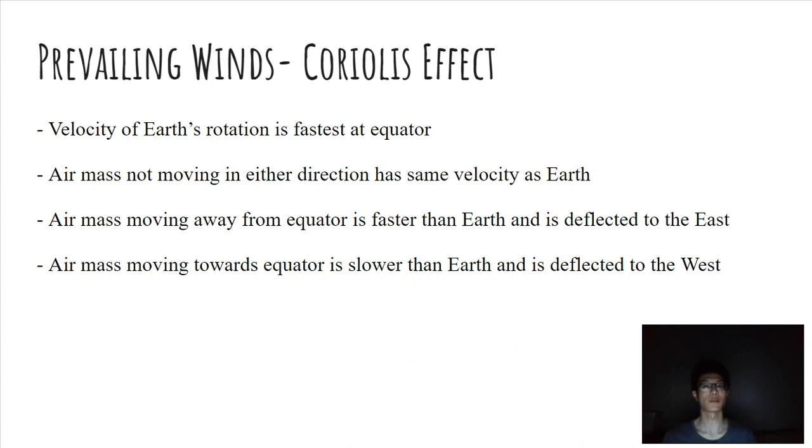The velocity of the earth's rotation is the fastest at the equator. If the air mass is not moving in either direction it has the same velocity as the earth. If the air mass is moving away from the equator it is faster than the earth and is deflected to the east. If the air mass is moving towards the equator it is slower than the earth and is deflected to the west.